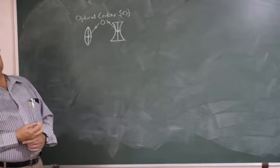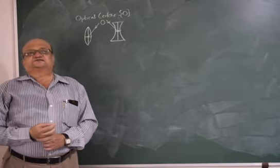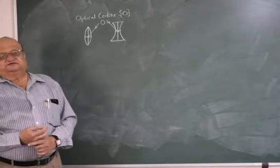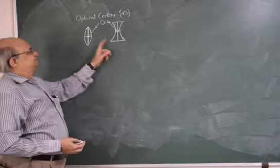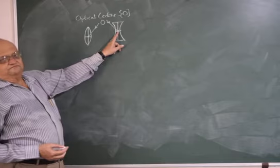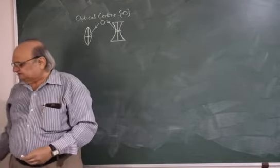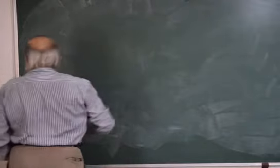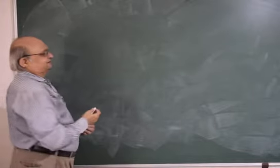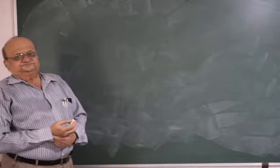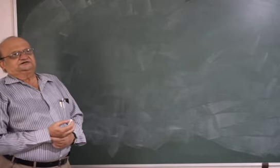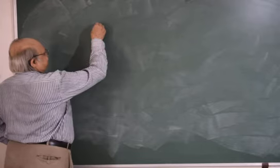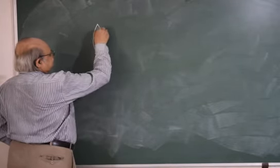Just like we measured all distances in the case of curved mirrors from the pole, in the case of lenses we will be measuring all distances from the optical centre. Let us first tabulate the Cartesian sign convention, but before we do that let us understand where the principal focus will be, so that our diagrams and Cartesian signs will be easier to understand.